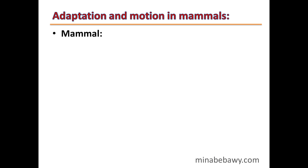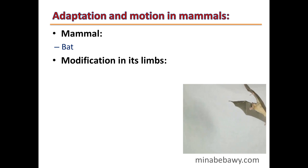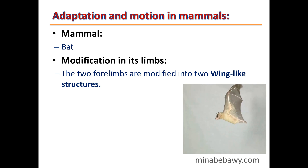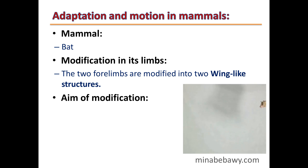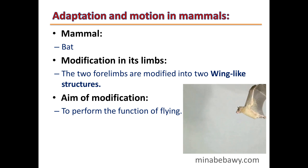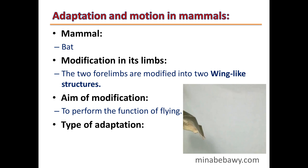Example 2: Bat. The two forelimbs are modified into two wing-like structures. The aim of this modification is to perform the function of flying. Type of adaptation: Structural adaptation.